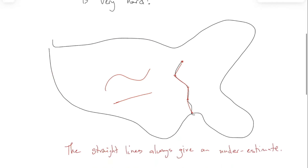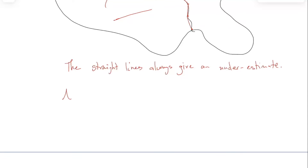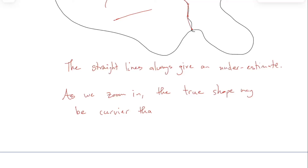What I'm trying to say is the straight lines always give an underestimate. As we zoom in, the true curvy shape may be curvier than we thought, but it's never less curvy than we thought. There's a weird sort of asymmetry here. This blackboard, which seems to be perfectly flat — if you look at it under an electron microscope, you realize it's actually not flat at that scale. It's not possible to see a rough thing and then look at it in a microscope and realize it was actually perfectly straight.